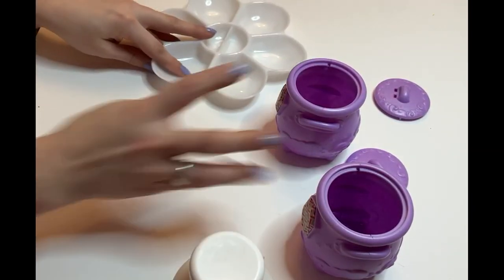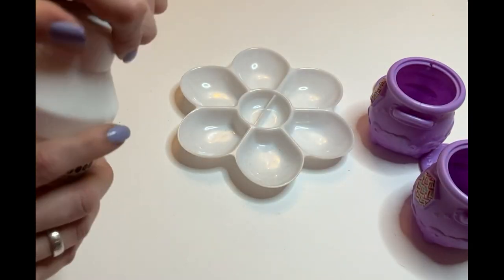Coat the cauldron in white gesso. This helps the paint to stick to the plastic.